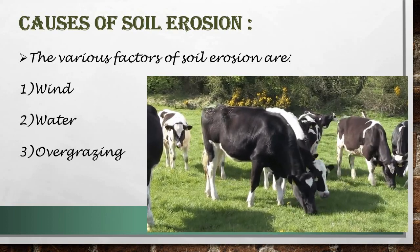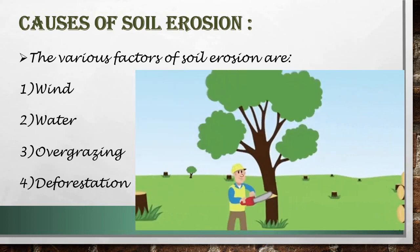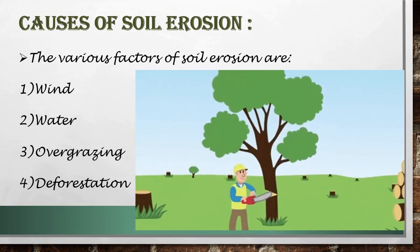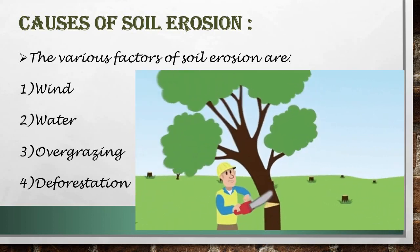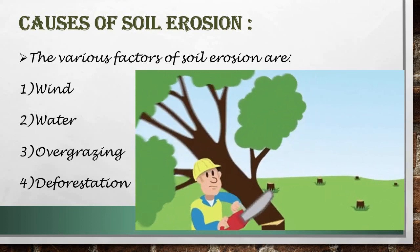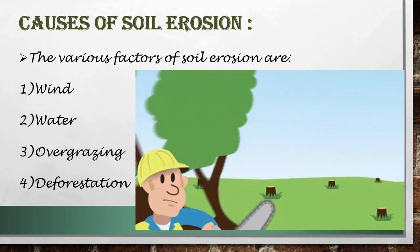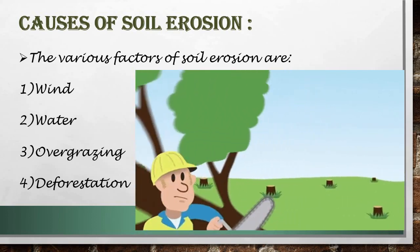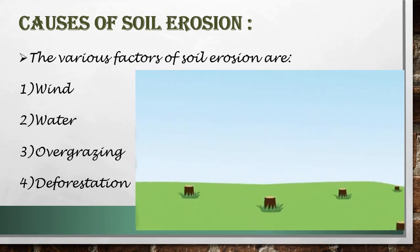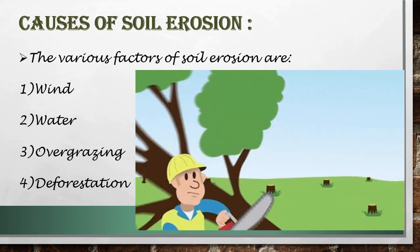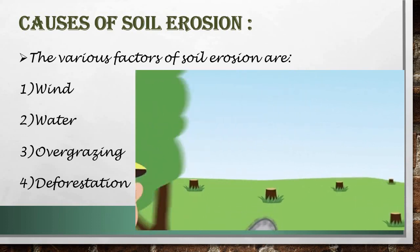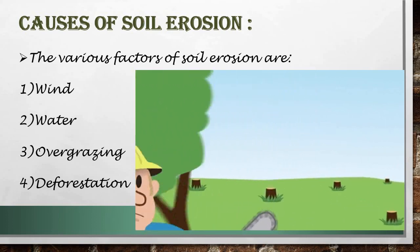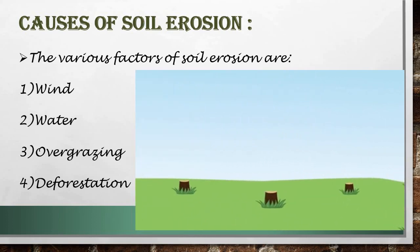The last factor is deforestation. Humans have taken land from the forest to cultivate in order to feed the ever-increasing population and to build houses, industries, etc. Cutting down trees on a large scale for these purposes is deforestation. The roots of trees hold the soil together, thus preventing the soil from being uprooted. When large areas of forest are cleared, the topsoil gets eroded by wind and flowing water.